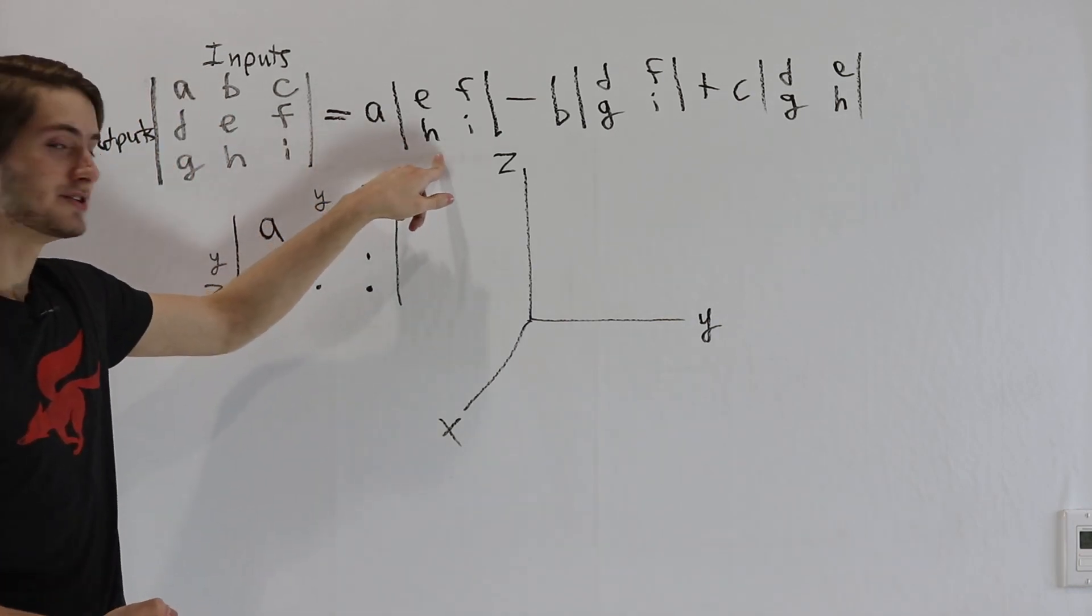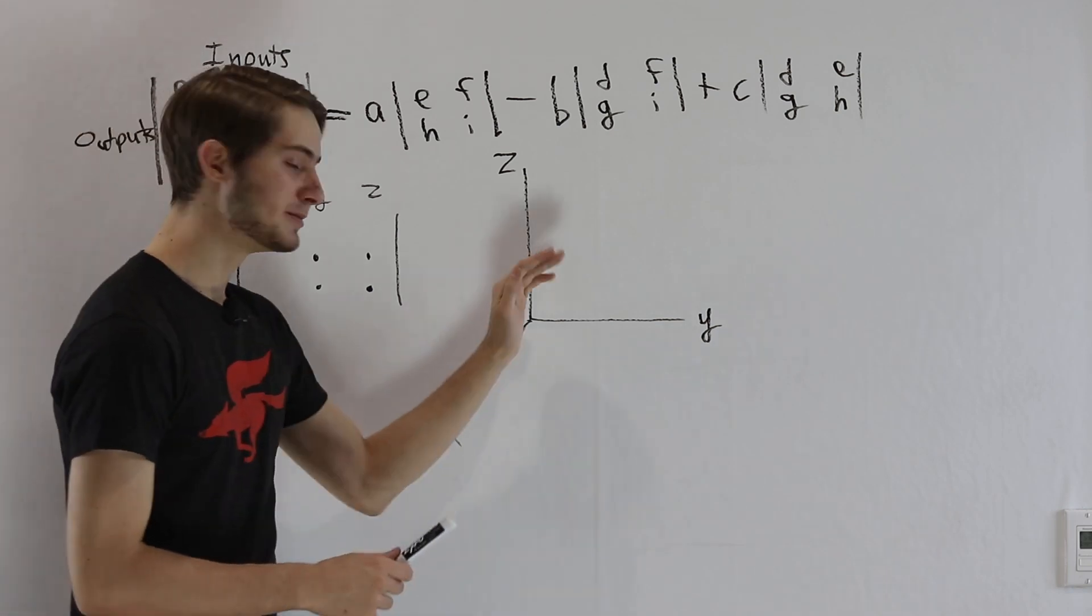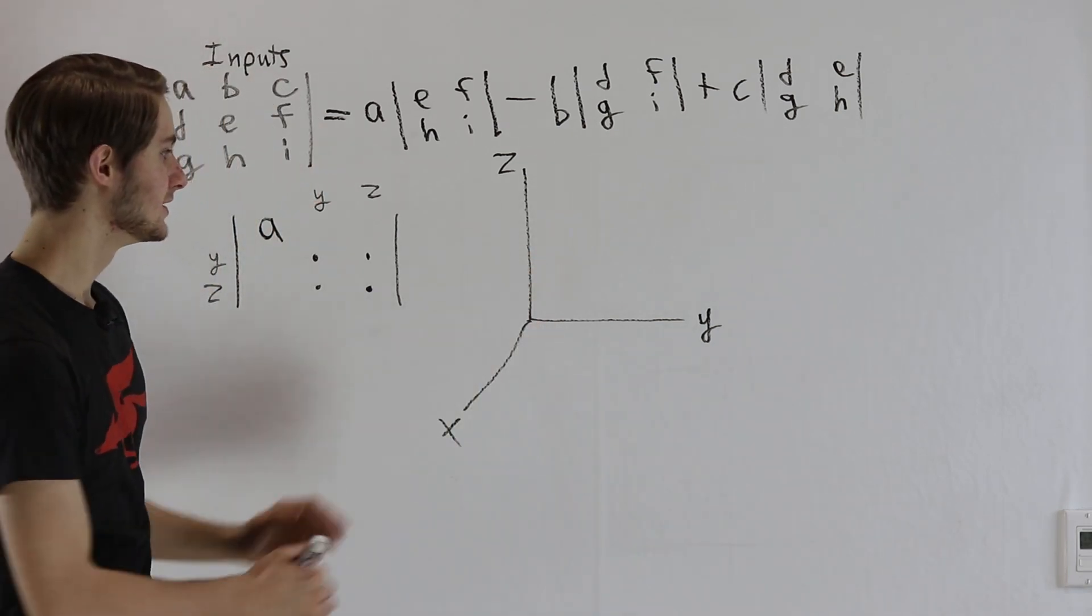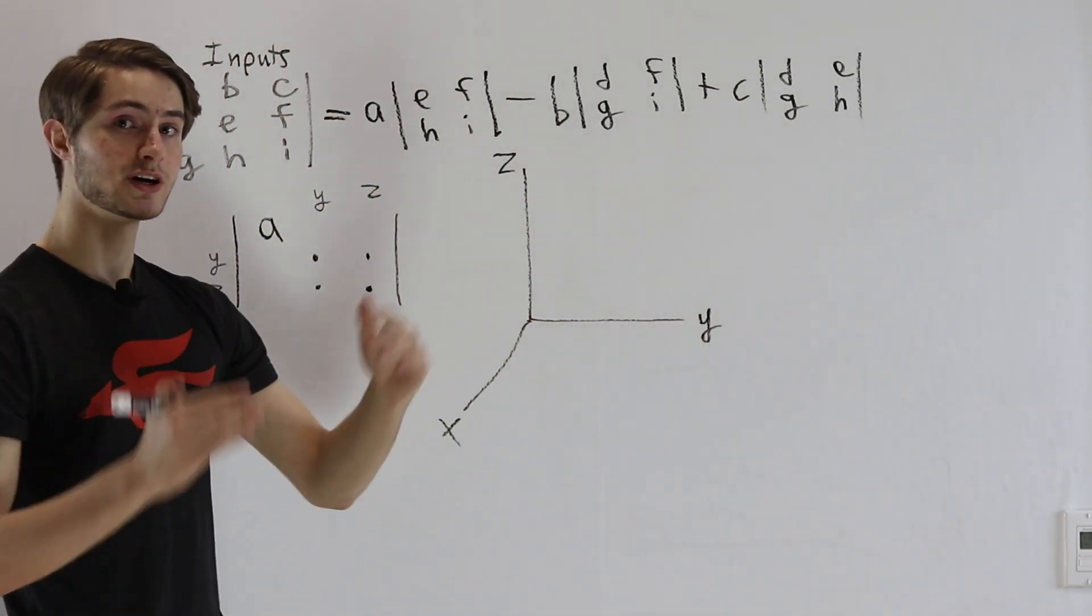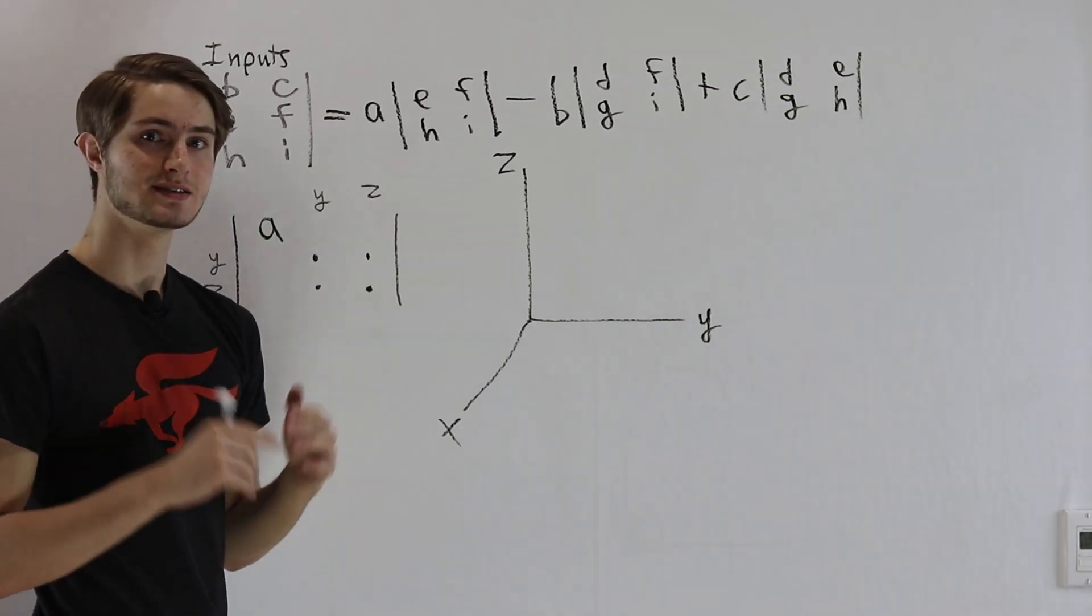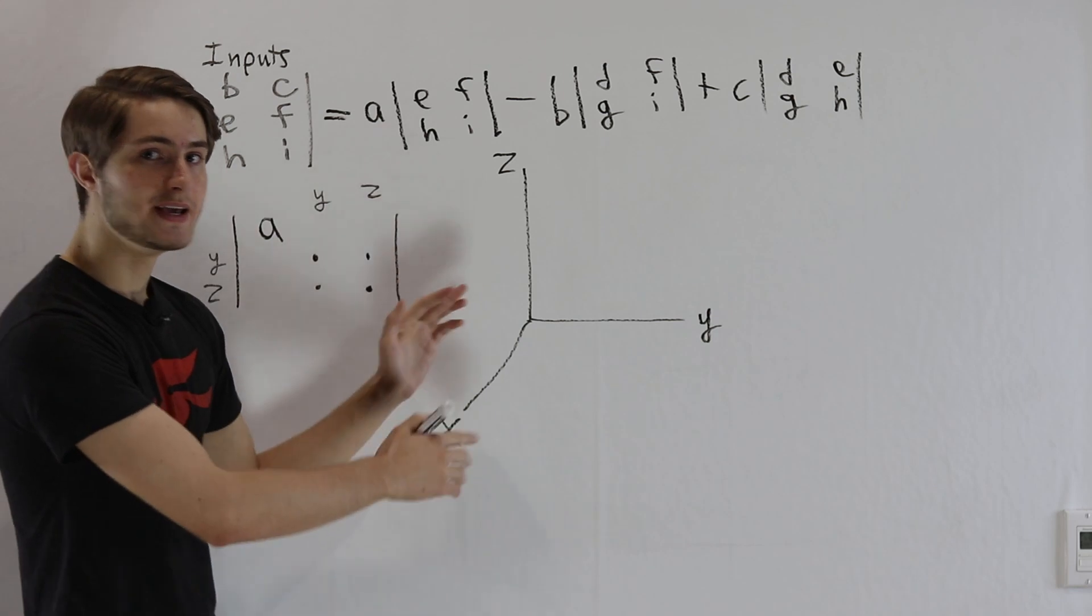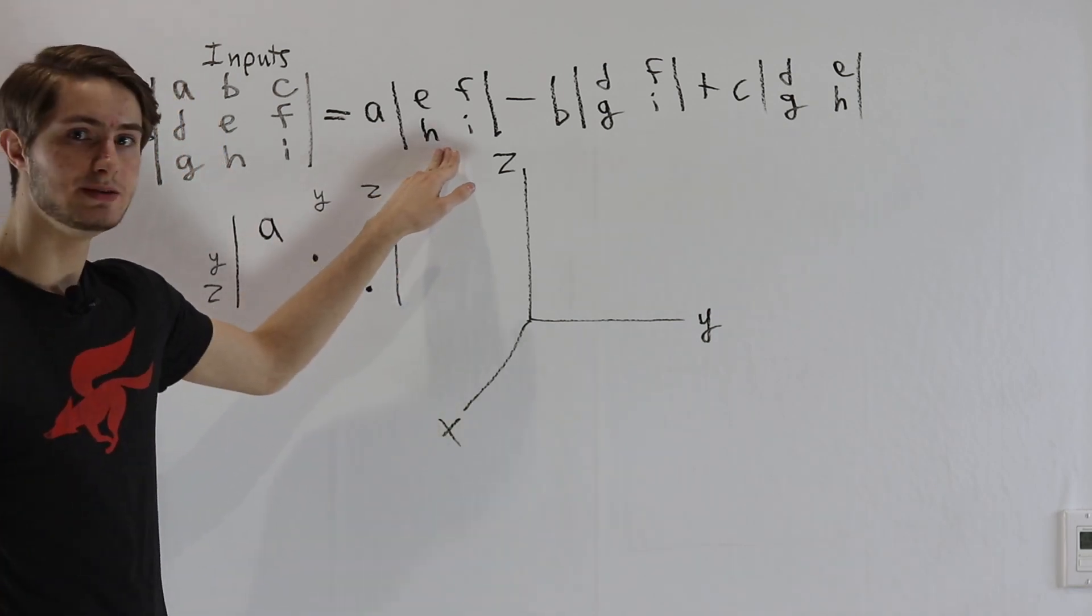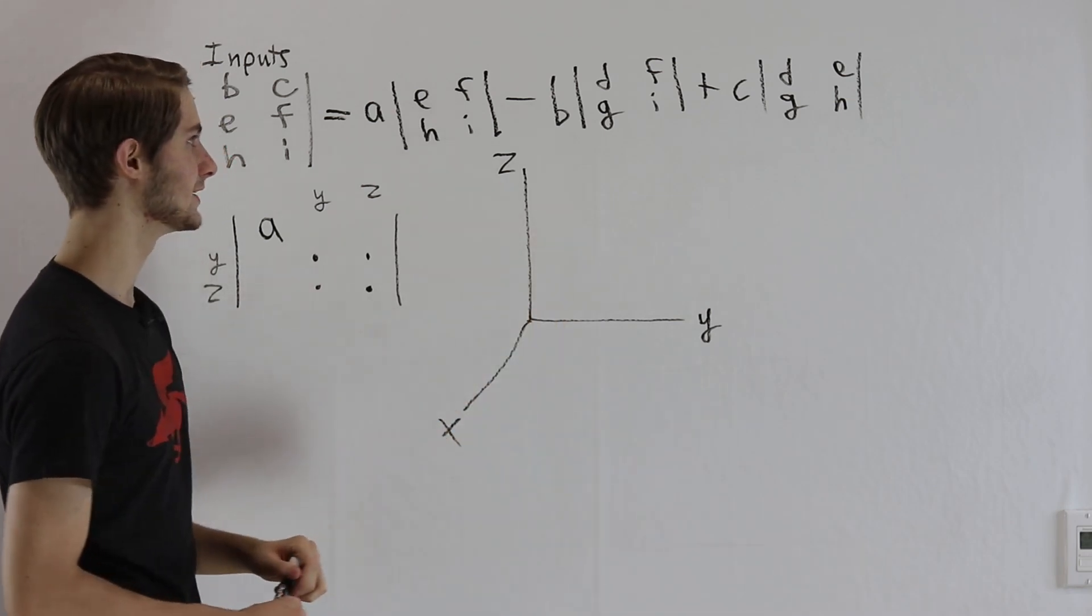So this A times this determinant here is saying we multiply how much the x component here gets scaled times how much the y, z plane gets scaled. And because those processes are perpendicular to each other, this is the exact same thing as taking the volume of a rectangular prism. We're doing the base, which in this case is our y, z plane's area, times the height, which is our perpendicular x-axis's area.